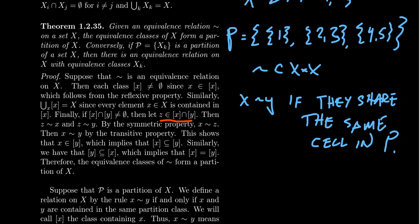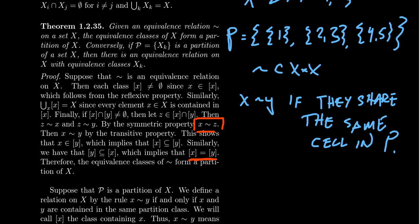So if X is equivalent to Z, and Z is equivalent to Y, then by the transitive property — notice how we use all three axioms — X is related to Y. That means X is an element of the equivalence class of Y, i.e., the class of X is a subset of the class of Y. Reversing the argument gives that the class of Y is a subset of the class of X. So we're forcing that X and Y are the same equivalence class. The only way two equivalence classes have a non-empty intersection is if they're the same class — giving us a contradiction. Thus the intersection between two distinct classes must be empty.